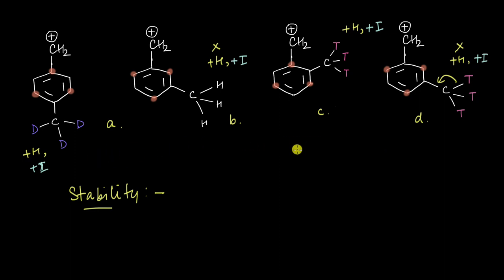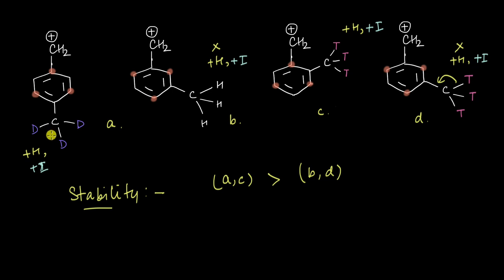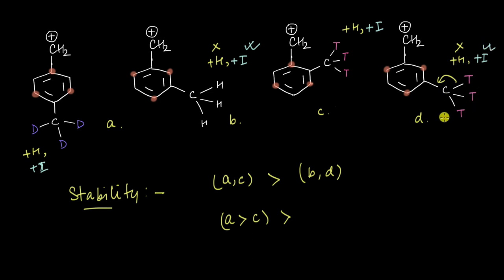Now that we have established how the attached groups affect the cation, let's figure out the stability order. A and C are clearly going to be more stable compared to B and D, as they can stabilize the cation via hyperconjugation. Between A and C, because C-D bonds are weaker and easier to break compared to C-T bonds, there will be a greater hyperconjugating effect in the case of CD3 compared to CT3. So A is more stable than C. Between B and D, hyperconjugation doesn't play a role, so the more important effect is induction. Because CT3 shows a greater inductive effect compared to CH3, D is more stable than B.